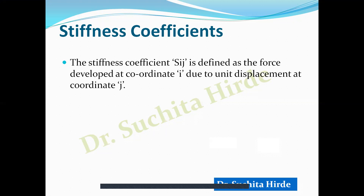Similarly, S31 is the force developed at coordinate 3 due to unit displacement at coordinate 1. The stiffness matrix looks like this: S11 is 1st row 1st column, S12 is 1st row 2nd column, S21 is 2nd row 1st column, and S22 is 2nd row 2nd column. Our aim is to calculate these coefficients, and in this video we will understand how to develop this stiffness matrix.